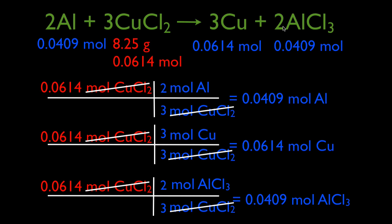So, to summarize: first we converted 8.25 grams of copper chloride into its moles. Then we used the molar ratio between copper chloride and the other three substances — aluminum, copper, and aluminum chloride — to convert into the number of moles. That was step two. We're not going to convert from moles to grams in this video, but we have done that in previous videos. Thank you very much, I hope that was helpful. If so, give me a thumbs up below, and thanks for watching — we'll see you next time.